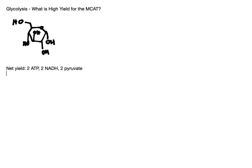The second high-yield piece of content you need to know is the rate-limiting enzyme, and that is phosphofructokinase. Phosphofructokinase actually has multiple versions, and the version we're interested in is phosphofructokinase 1, which is our rate-limiting enzyme.